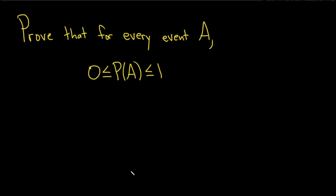In this problem, we have to prove that for every event A, the probability of A is between 0 and 1.